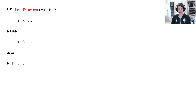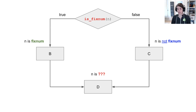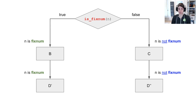To look at a simple example: if we have an if statement with a type check — if is_fixedNum of n — and if the statement is true we go to block B, otherwise we go to block C, and then we merge in block D. In terms of a control flow graph, in block B we know that n is fixedNum, and in block C we know that n is not fixedNum. So when we merge in block D, we know that n is either fixedNum or not fixedNum — so we know nothing at all. The idea here is to do selective tail duplication so that we can preserve the fact that n is fixedNum in block D' and n is not fixedNum in the other version of D'.